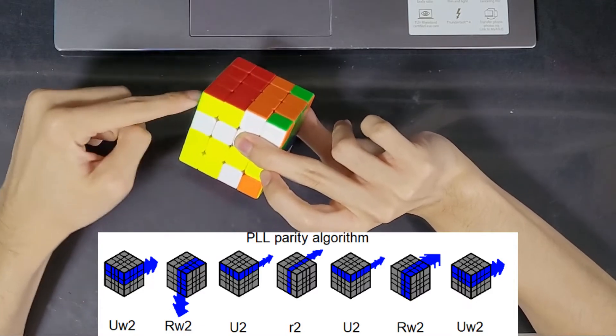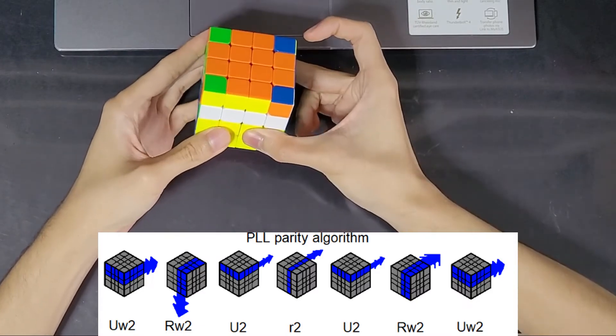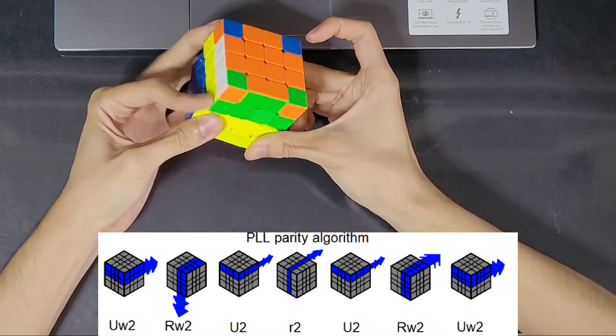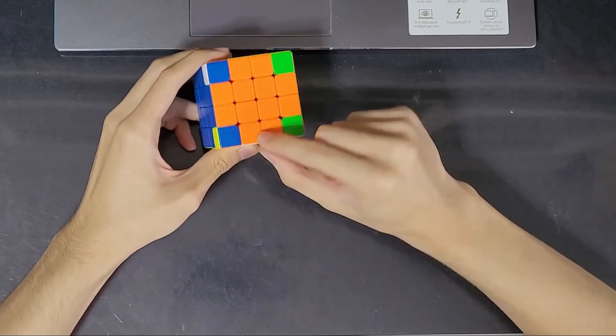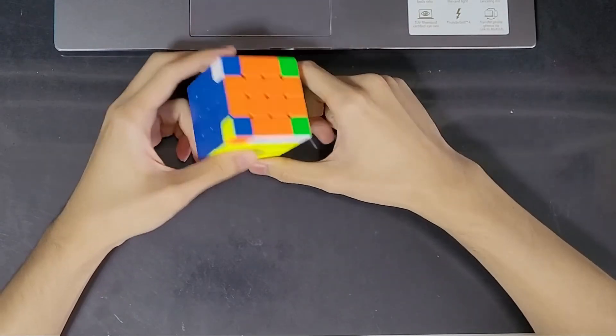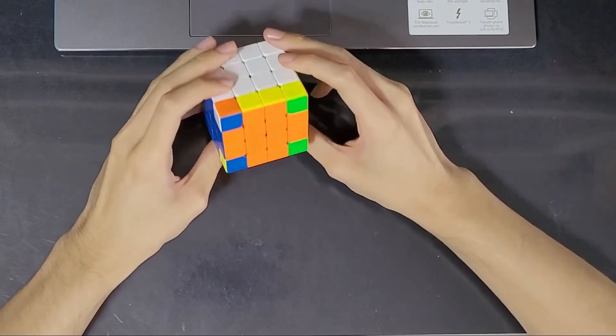And now again, I have the top layer 180. Turn my wrist back like that and then turn both layers 180. And you have seen that this edge has switched with this edge. And now this is solvable by normal 3x3 means.